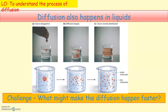Challenge question: what might make diffusion happen faster — how can we increase the rate of diffusion? Increasing the temperature of the water would increase the rate at which the dye diffuses. If we increase temperature, we increase the kinetic energy of the particles, so the particles move faster, which increases the rate of diffusion. Another factor is the concentration gradient — if we increase the concentration gradient, the rate of diffusion also increases.